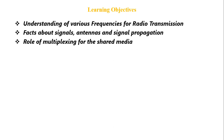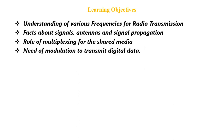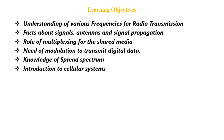In wireless communication, the media is a shared media — here, the open space. So we need some multiplexing techniques for transmitting signals without interference. Students will also know the need of modulation: to transmit digital data, it must be modulated with an analog carrier. Additionally, you will gain knowledge of spread spectrum and a brief introduction to cellular systems.